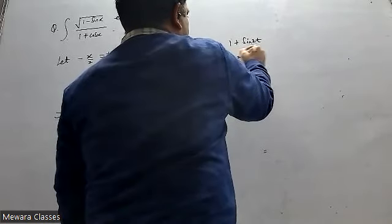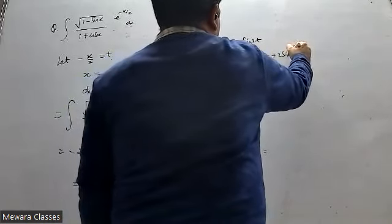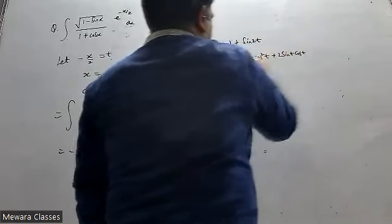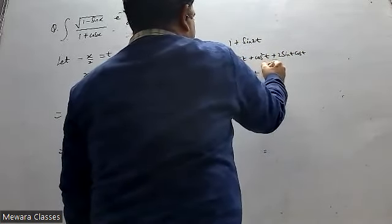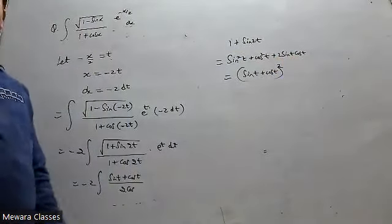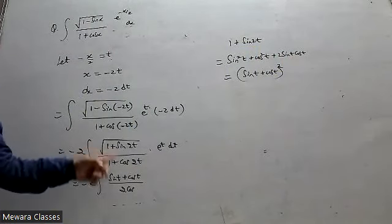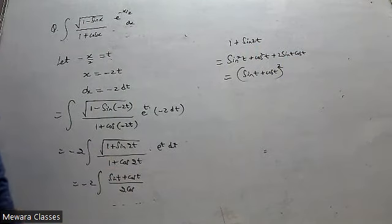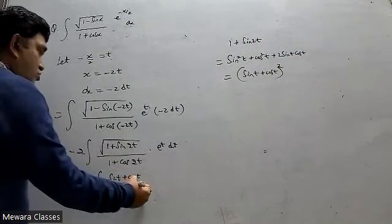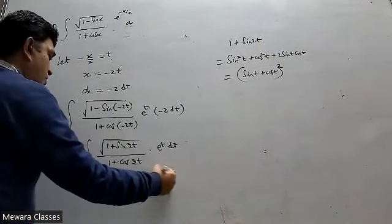1 plus sin 2t. Cos square plus cos square. So what will come? Cos square t by 2, e to the power t dt.